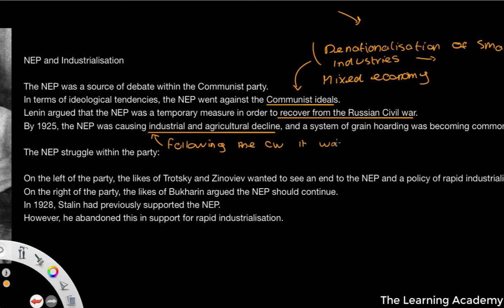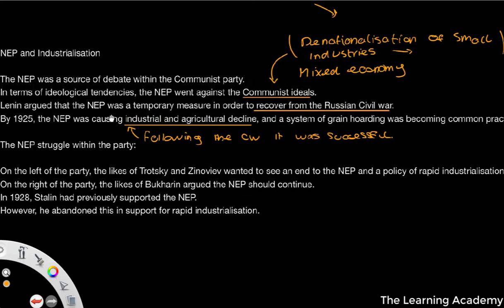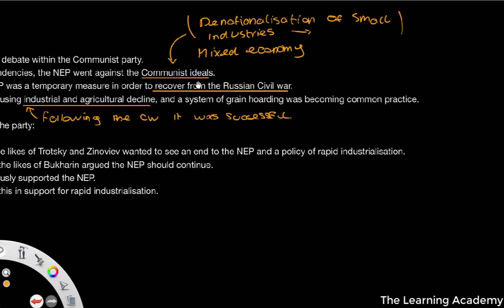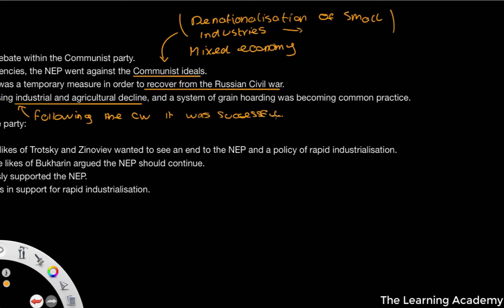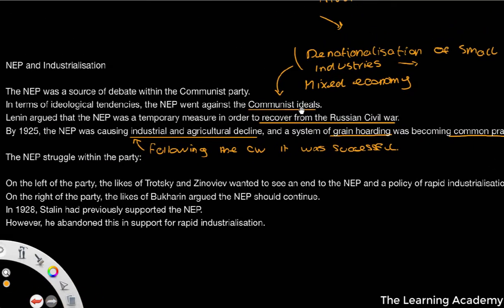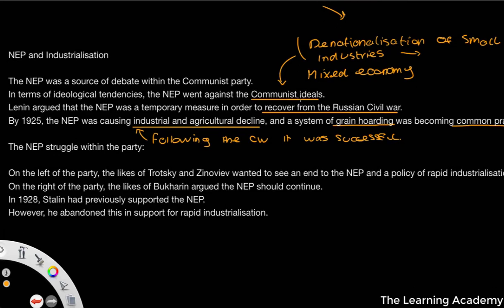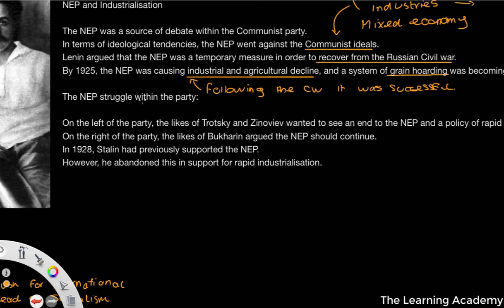Initially following the civil war, the NEP was successful. It brought back industries, and we see the electrification of a number of areas of the state that were destroyed by either World War One or the Civil War. So we have a boom following the Russian Civil War, but by 1925 we see a decline. A system of grain hoarding had become common practice among the agricultural sector, so the NEP didn't actually look like it was being very successful. Therefore this caused an NEP struggle in the party.